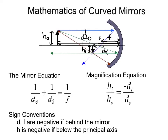In order for these mathematical equations to work, we need to take into account a few sign conventions. Distances along the axis, including the focus, are negative if they're located behind the mirror. Heights are negative if they're measured below the principal axis. Using these sign conventions will make the mathematical equations work out to match your ray diagrams.